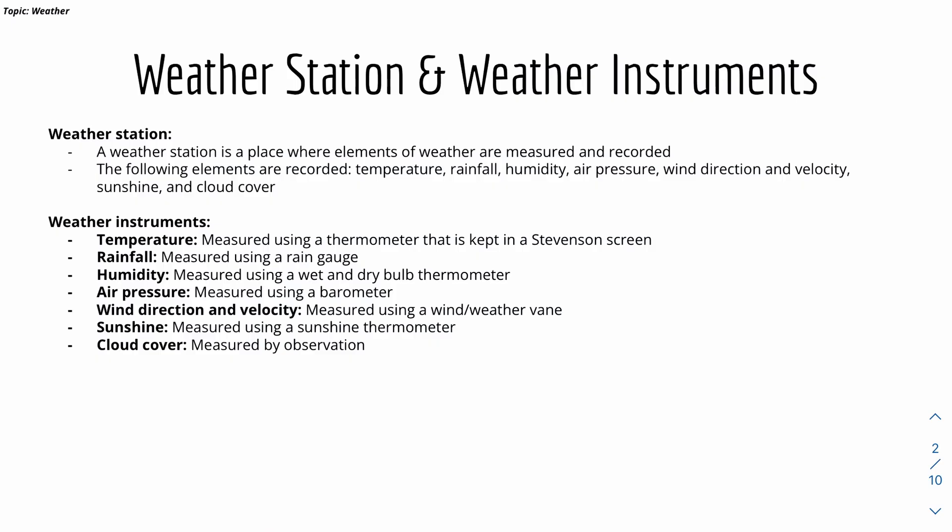We'll first look at weather station and weather instruments. A weather station is a place where elements of weather are measured and recorded. In our syllabus, the elements of weather are temperature, rainfall, humidity, air pressure, wind direction and velocity, sunshine, and cloud cover.